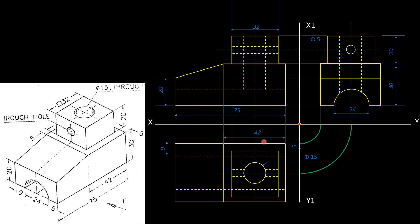The additional details include a 15mm diameter through hole — through the entire solid. This hole is cylindrical and appears as two lines in the front view. The diameter is 15mm, so the axis is offset 7.5mm on each side.